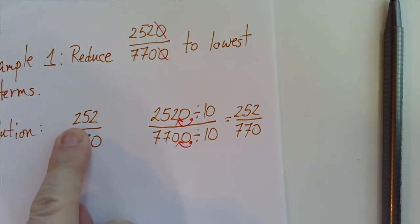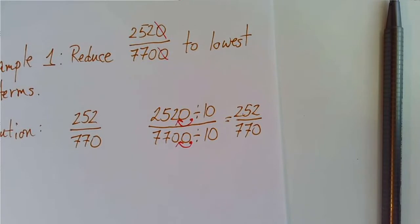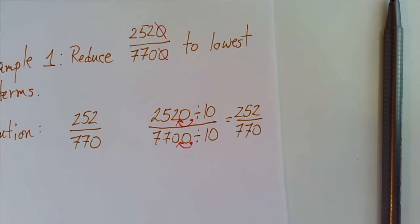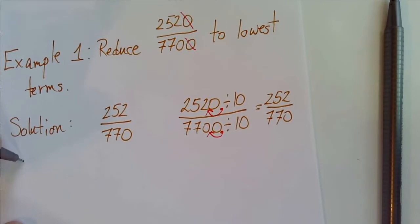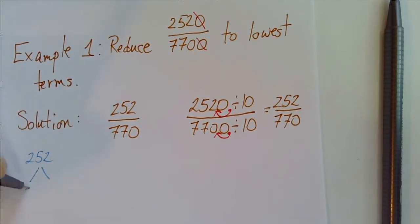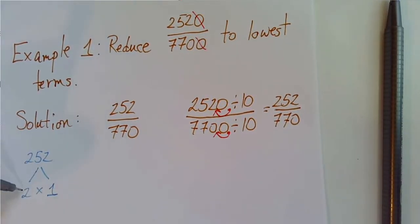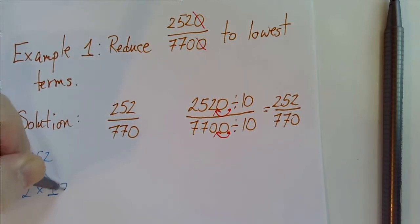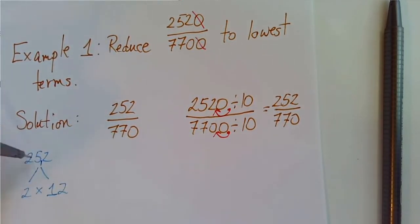Now, we're going to get the prime factors of 252 and the prime factors of 770 to see which ones are in common. So let's start with 252. Since this number ends in 2, 4, 6, or 8, it's an even number and 2 will go into it evenly. 2 goes into 2 once. 2 goes into 5 twice with a remainder of 1. 2 goes into 12 six times.